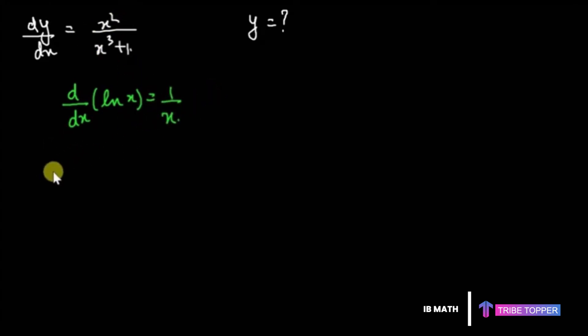Therefore let's try d/dx of ln of x cubed plus 1. What will be the answer? It's just going to give us 1 upon x cubed plus 1 times, as per the chain rule, the derivative of the inner function is 3x squared.